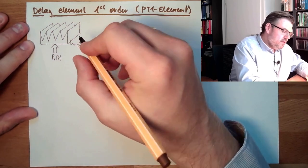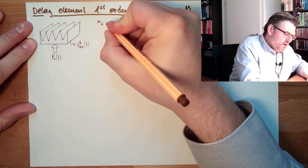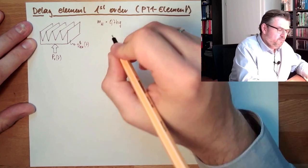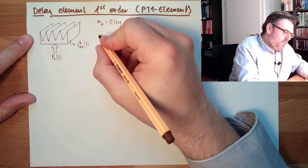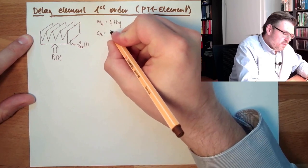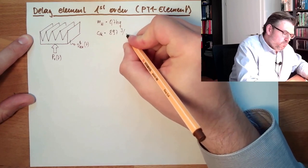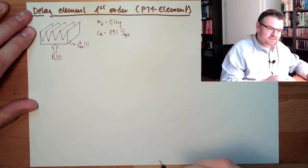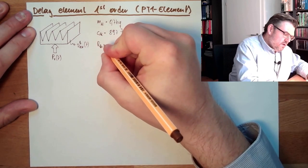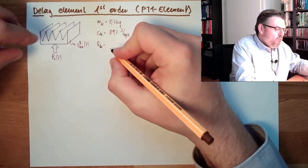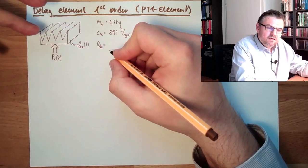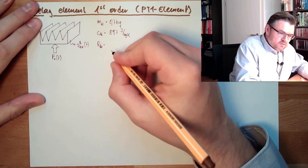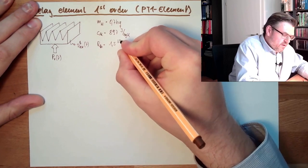The important parameters we need are: the mass of the aluminium heat sink, which shall be 0.7 kilograms; the heat capacity of aluminium, which is 897 Joule per kilogram per Kelvin; and the so-called thermal resistance R_TH, which specifies how much power it can radiate for a given amount of excessive temperature. This shall be 1.5 Kelvin per Watt.